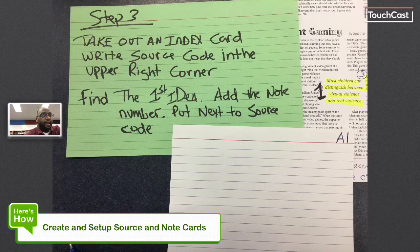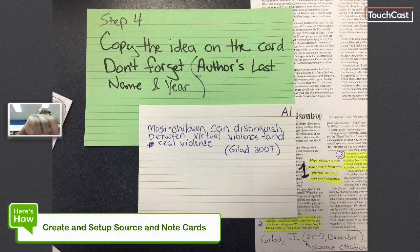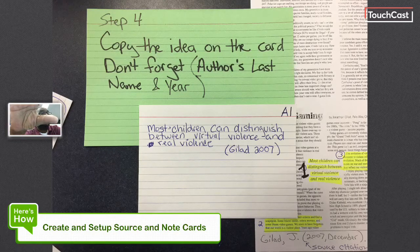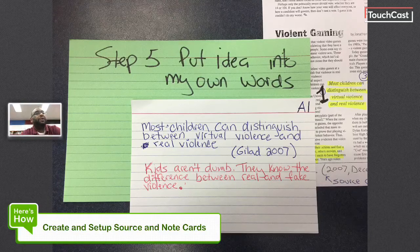So I'm gonna put the code, and then I'm gonna write the idea on the card. I'm gonna make sure I have the author's last name and year — you're going to need that for in-text citations. So far I have an idea card but not a full note card yet. To get to a full note card, the next thing I'm going to do is take the idea from the card and paraphrase it — put it in my own words.